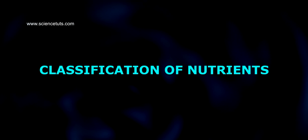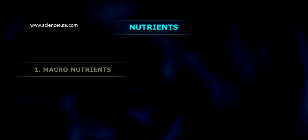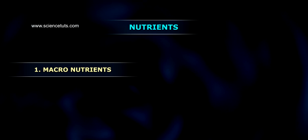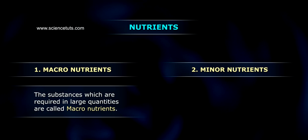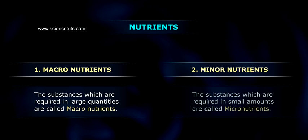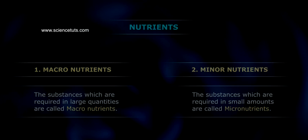Classification of Nutrients. Majorly, nutrients are classified into two types: 1. Macronutrients — the substances which are required in large quantities. 2. Micronutrients — the substances which are required in small amounts. Macronutrients are again classified into the following types.